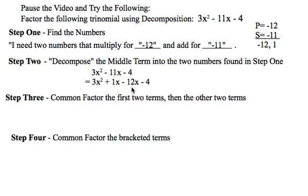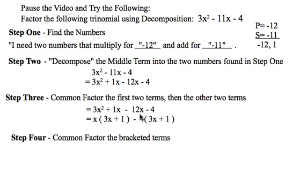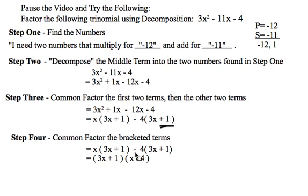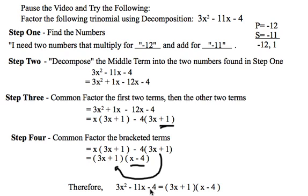The order here doesn't matter — you'll still end up with the same result. Group factor into two separate pieces, common factor from the first two terms and the last two terms. So the first two terms have an x common; out of the second two terms, there's a negative 4 common. Note the sign change on the positive 1 right here. Then I have the 3x plus 1 common in both brackets — I can factor that out front. This whole piece comes around, and I'm left with x minus 4. Therefore, 3x squared minus 11x minus 4 as a trinomial can be factored to 3x plus 1 times x minus 4.